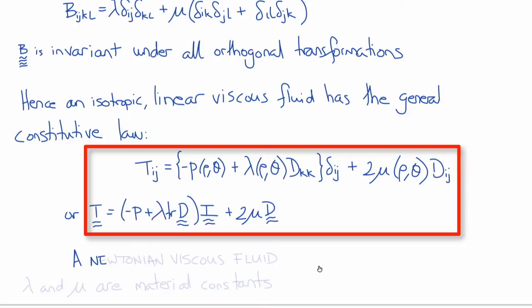This is the equation for a Newtonian viscous fluid. Lambda and mu are the two material constants that describe the physical properties of the fluid.